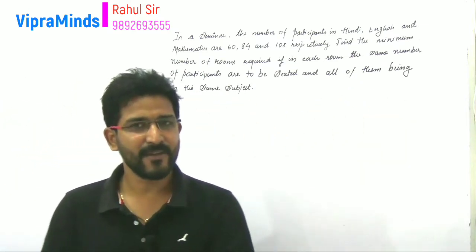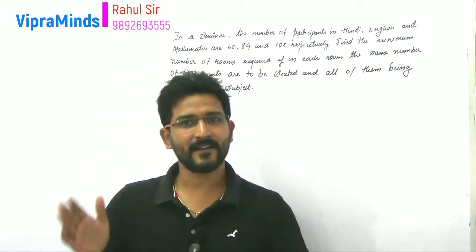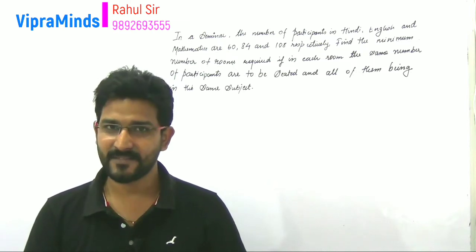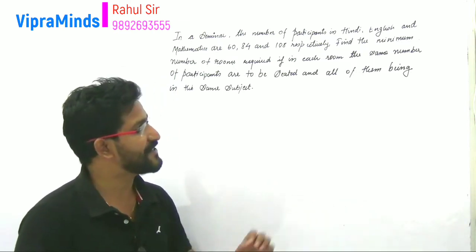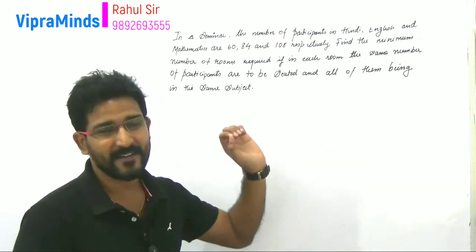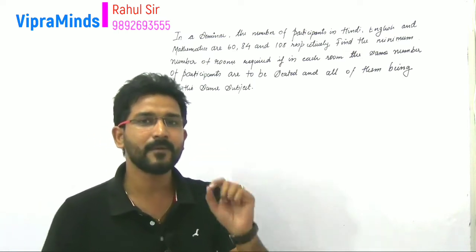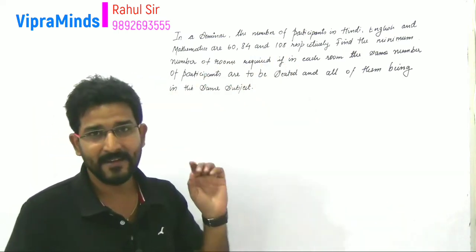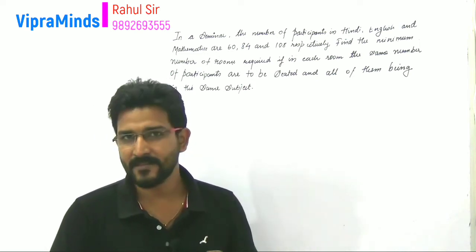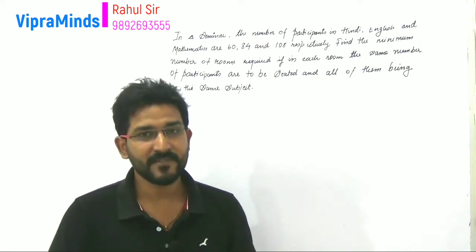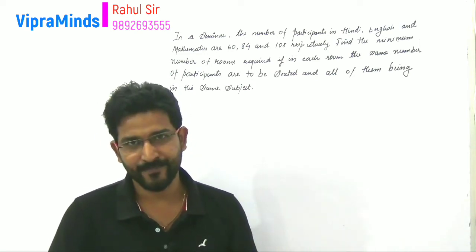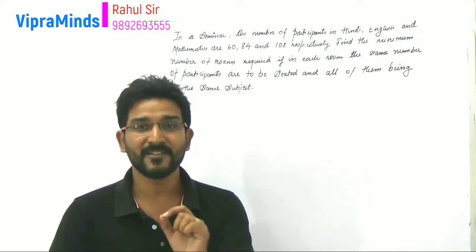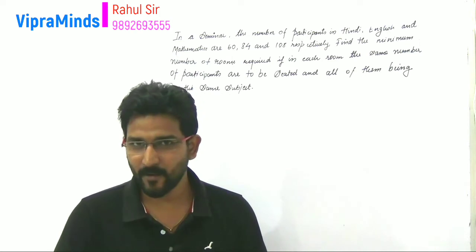In every classroom we have to arrange the same number of students and they should be of the same subject. The first condition is that we have to arrange the minimum number of rooms required. If the minimum number of rooms is required, that means we have to arrange the maximum number of students in every classroom.